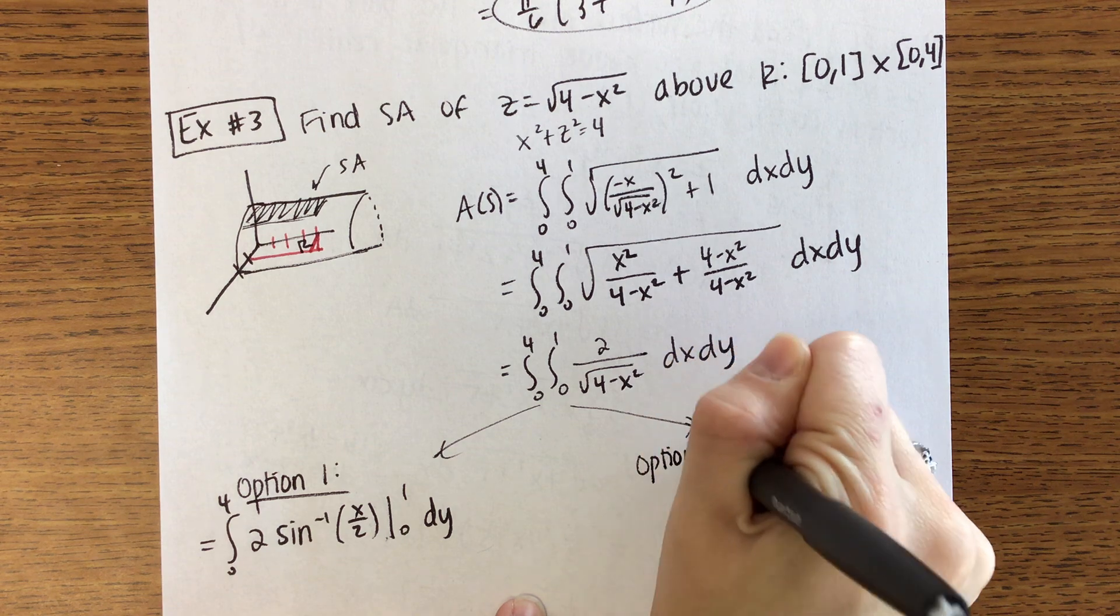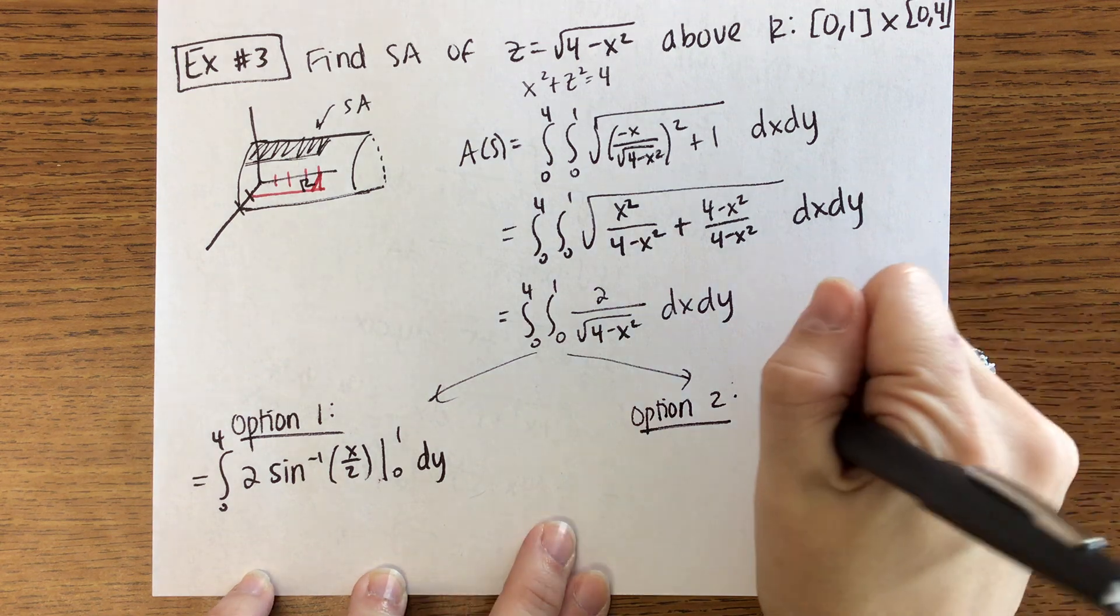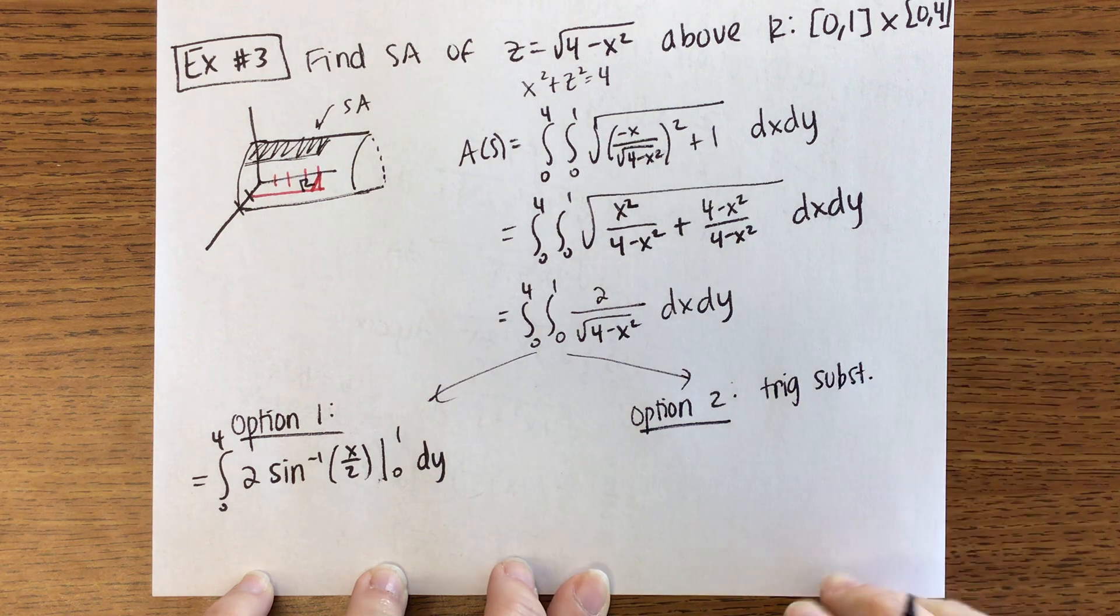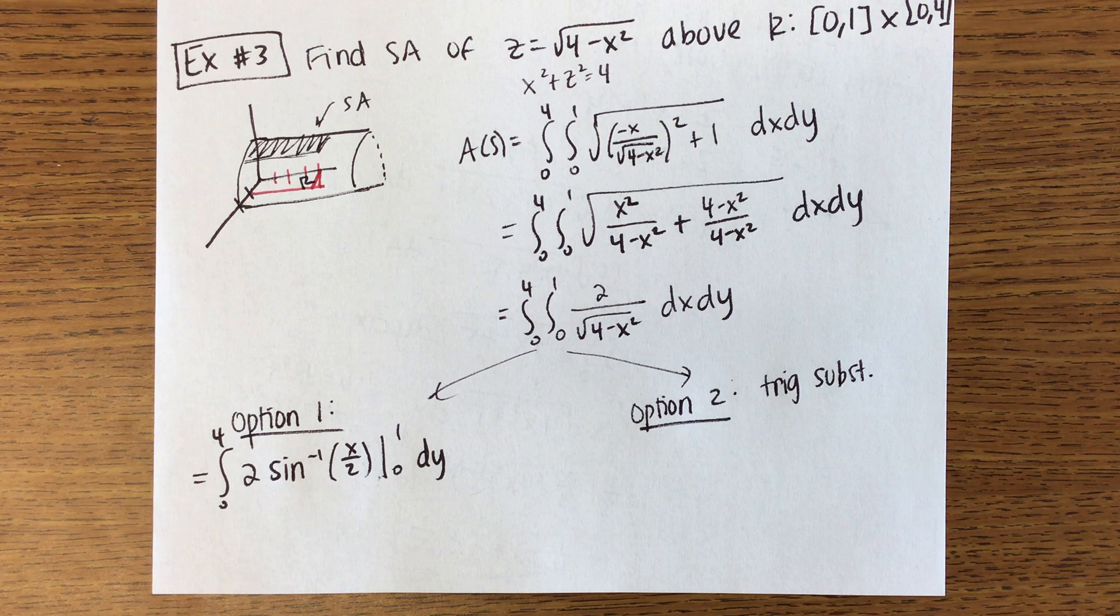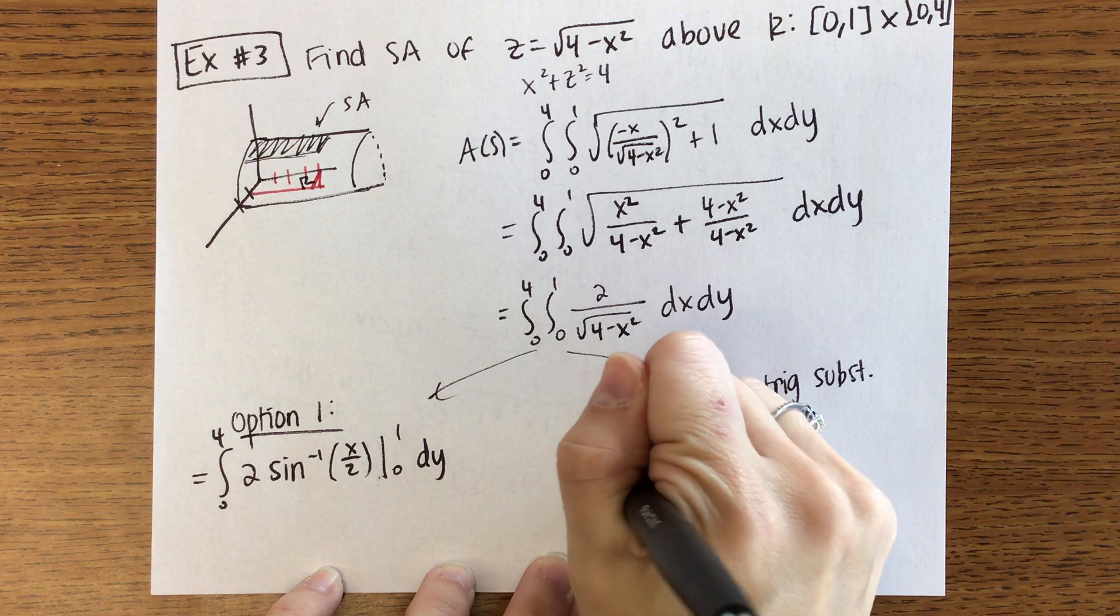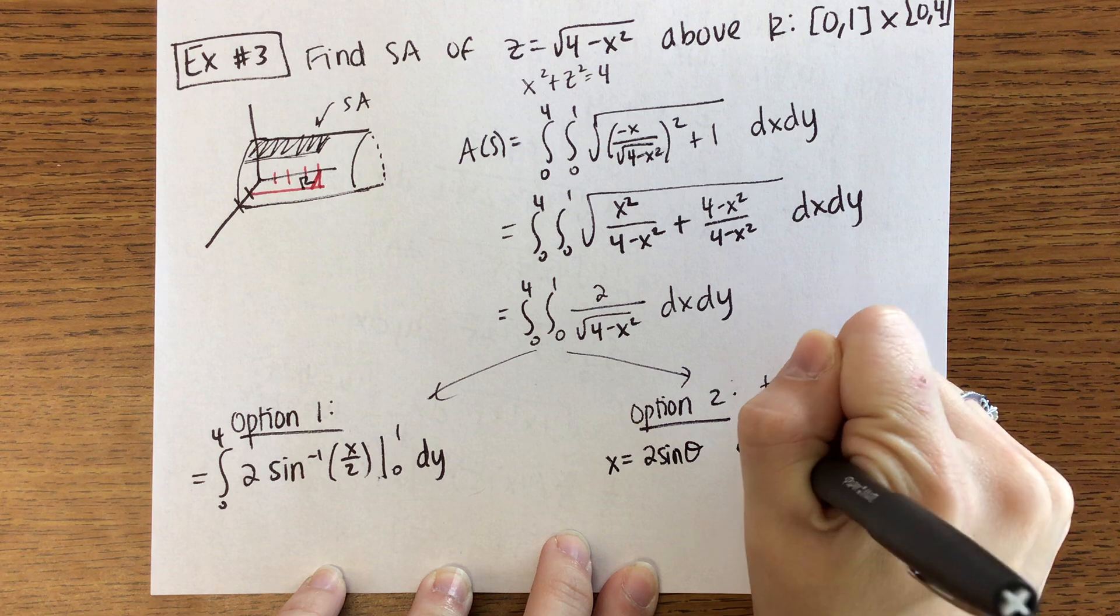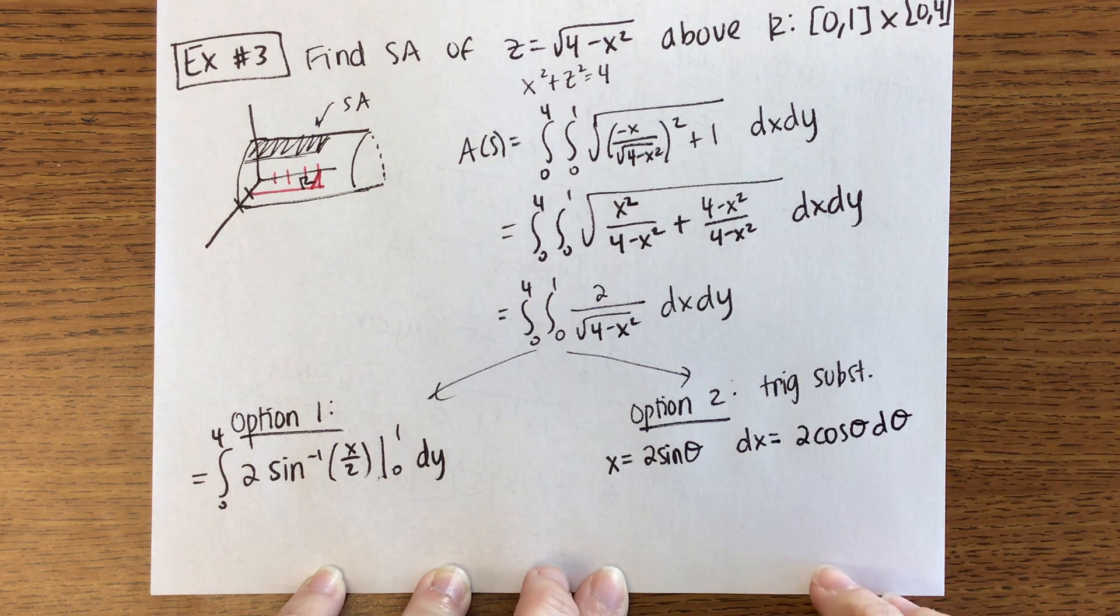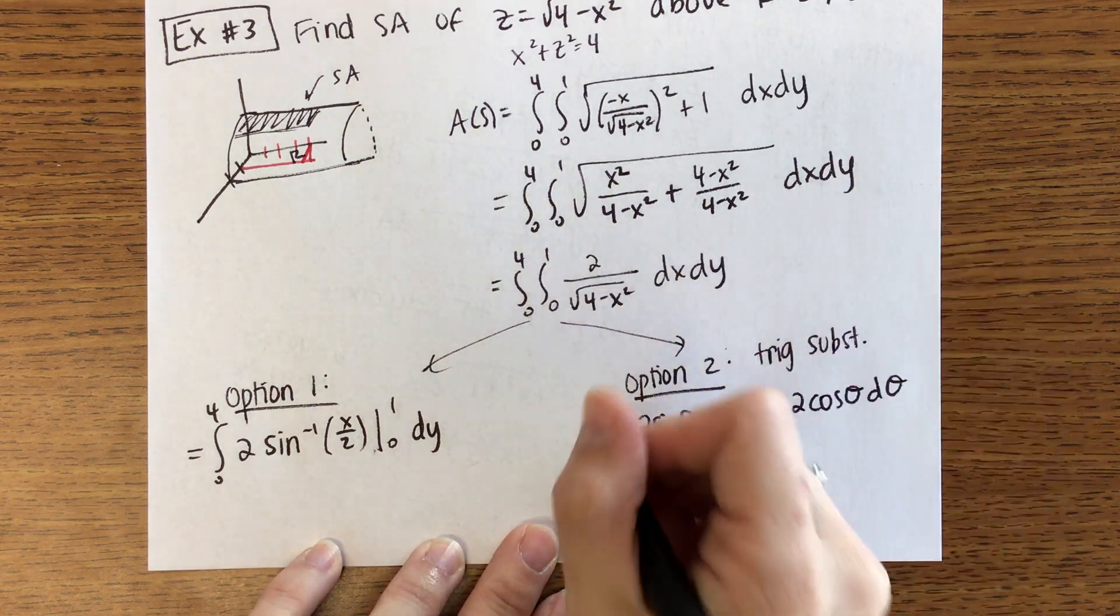Personally I don't have all those memorized because they don't come up a whole heck of a lot. Your second option is a trig substitution. Trig substitution is always going to work and you don't have to memorize all of your inverse trig functions. For your trig substitution call X 2 sine of theta. DX then will be 2 cosine of theta d theta. So I'm just going to ignore that 0 to 4 for a minute.